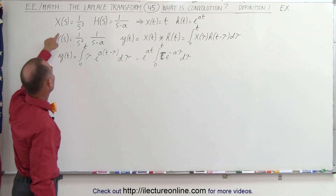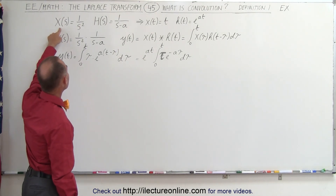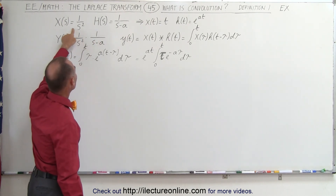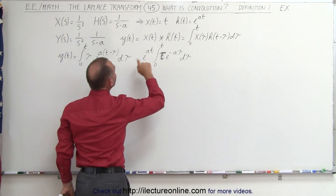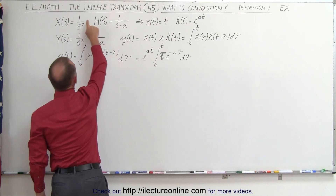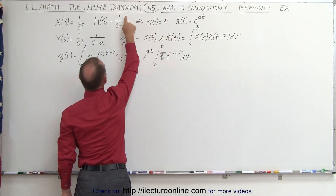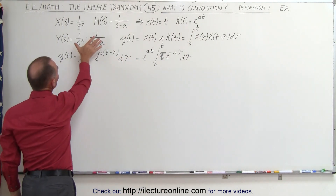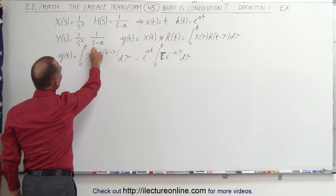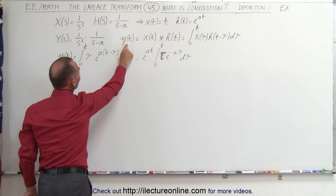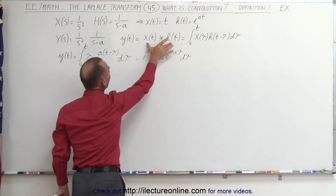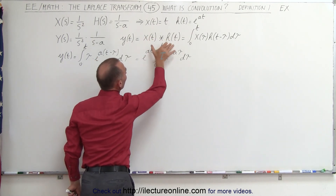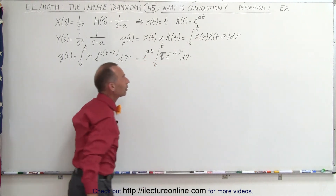Remember that we had two functions in the frequency domain: the input to the system and the impulse response of the system. The inverse Laplace transform of 1 over s squared is equal to t, and for 1 over s minus a it is equal to e to the at. We also learned that when we have these two functions multiplied in the frequency domain, we can find the corresponding output in the time domain by taking the convolution of the individual inverse Laplace transforms, which is defined by this integral.